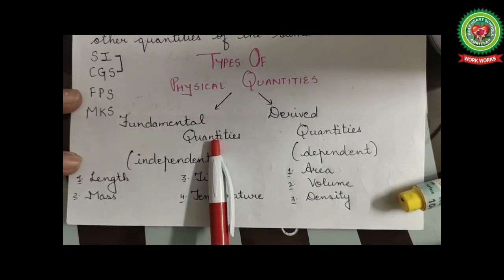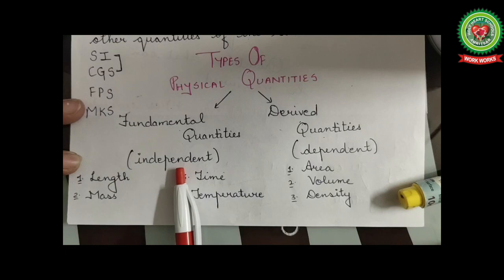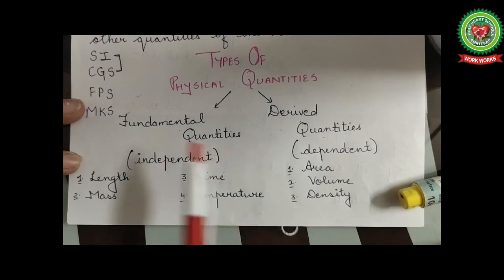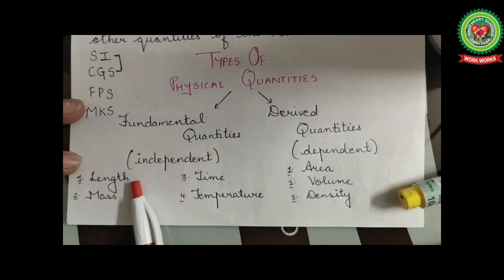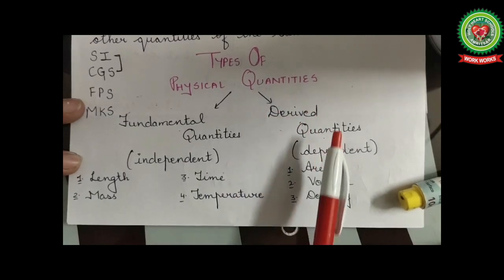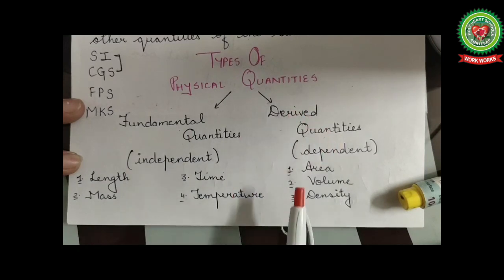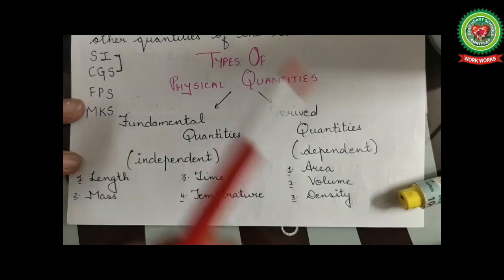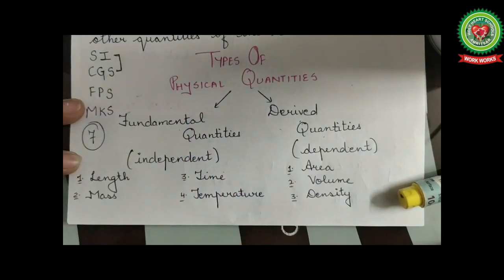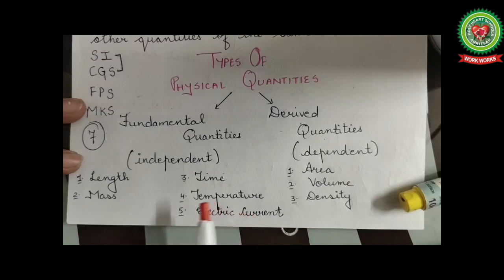There are two types of physical quantities: fundamental quantities and derived quantities. Fundamental quantities are independent quantities that do not depend upon any other quantities — for example, length, mass, time, and temperature. Derived quantities, where D stands for dependent, are quantities that depend upon fundamental quantities — for example, area, volume, and density. In physics we have seven fundamental quantities and uncountable derived quantities.